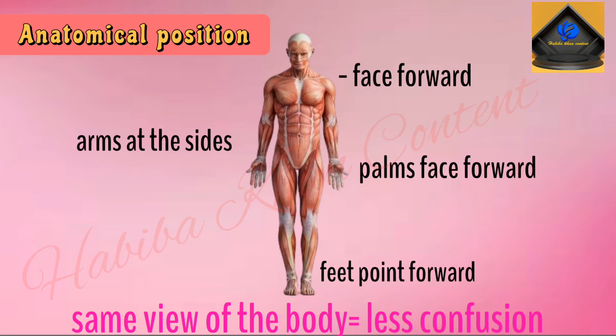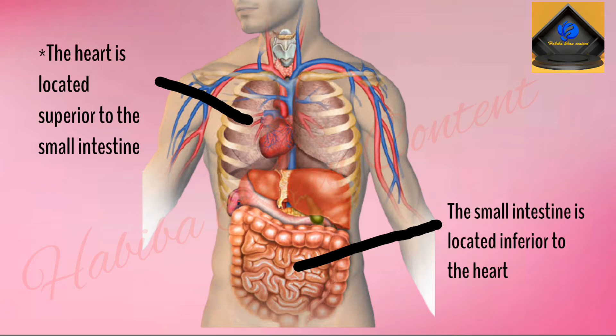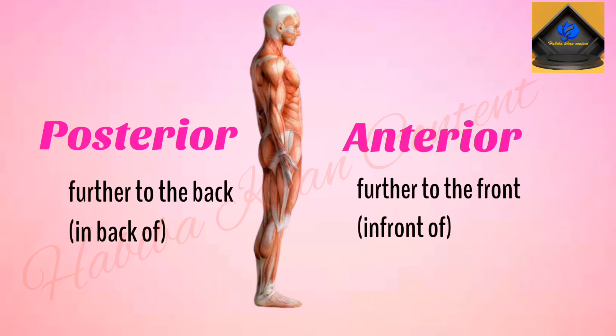If everyone is looking at the body in the exact same position, there will be less confusion when discussing anything related to anatomy. We are going to start with superior and inferior. Superior means toward the head, but it can also mean upper or above. Inferior means toward the feet, but it can also mean lower or below. So we would say that the heart is located superior to the small intestine, or we could say that the small intestine is located inferior to the heart.